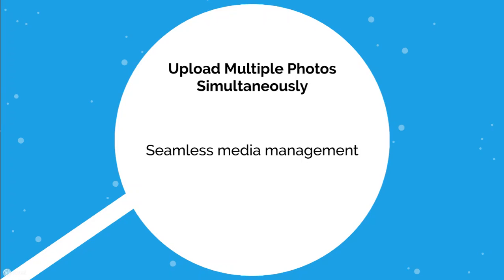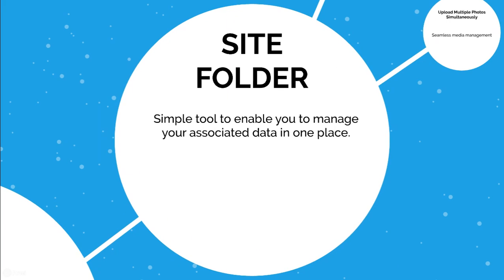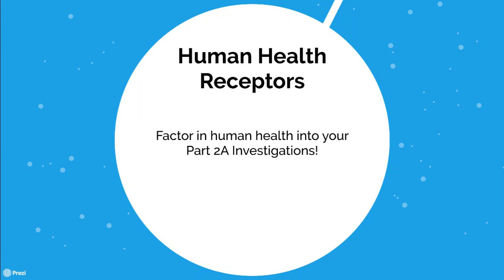The site folder is a small tool, but small but mighty. It enables you to manage all your associated data in one place. With a click of a button you can instantly create a site folder and bring all the information together, because we know some users have data stored in different places and we want to help bring it all together — that's where it can be best utilized. Finally, for contaminated land users, the human health receptors feature means you can instantly see the human health scores on your contaminated land investigations and factor them in straight away.